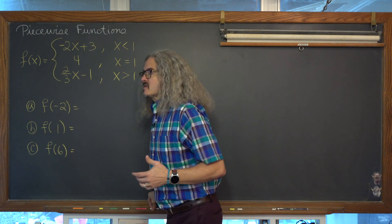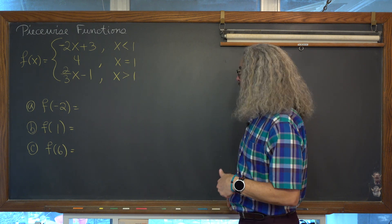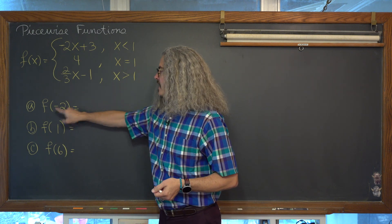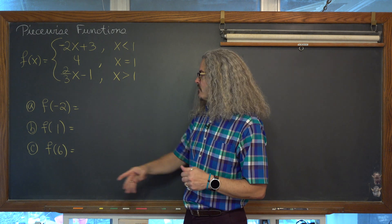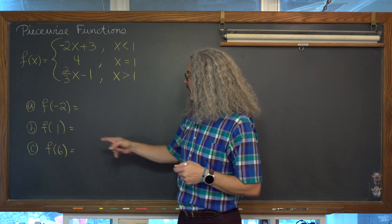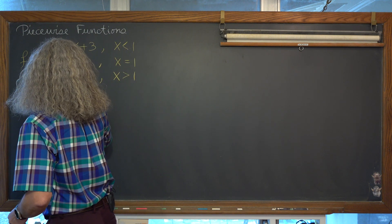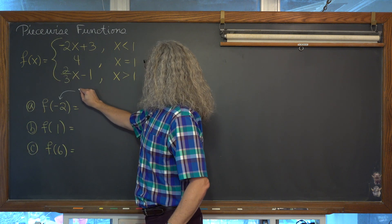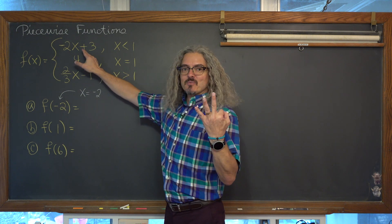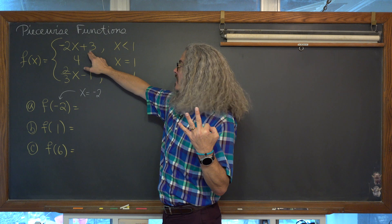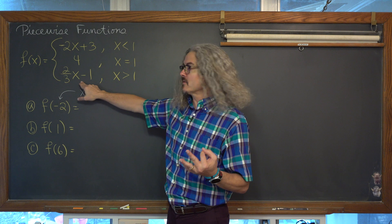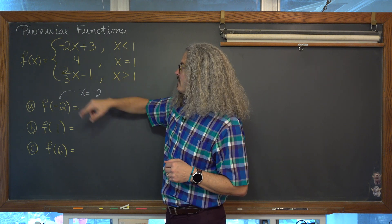Lots of students have questions about these when they either have not seen them for a long time or when they're introduced for the very first time. So how do we evaluate f of negative 2? All we're going to get as an answer is a numerical value. My particular example here has three parts: f of x is equal to negative 2x plus 3, f of x is equal to 4, and f of x is equal to 2 thirds x minus 1.